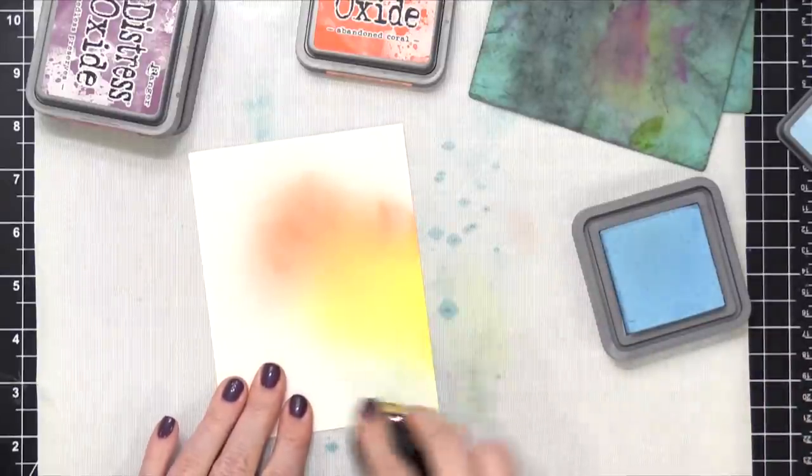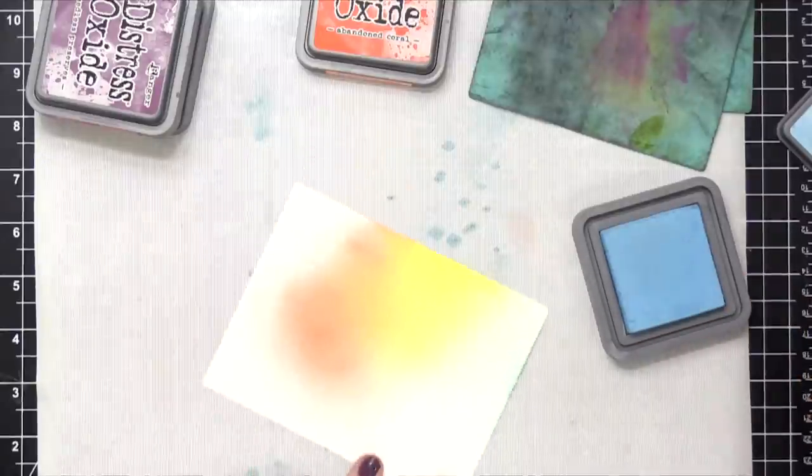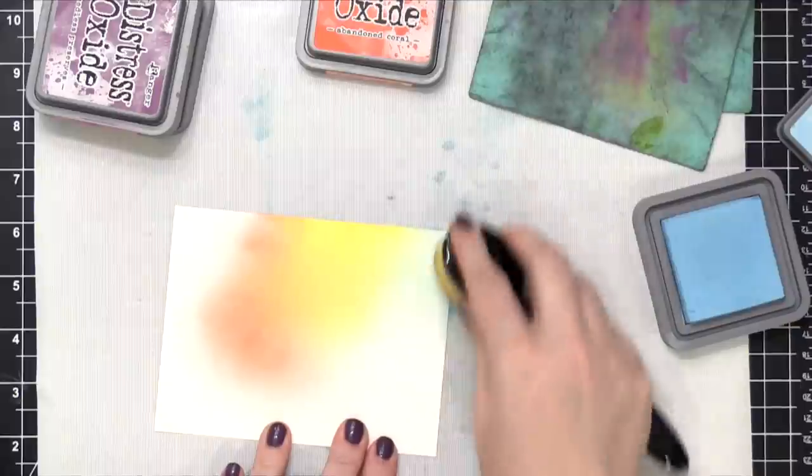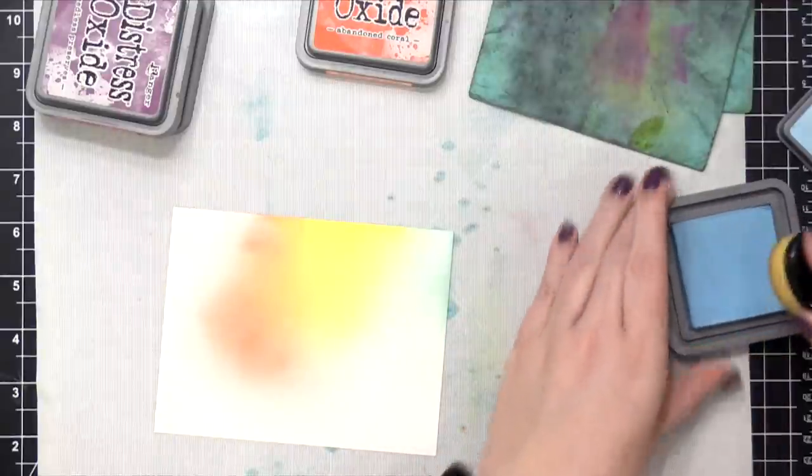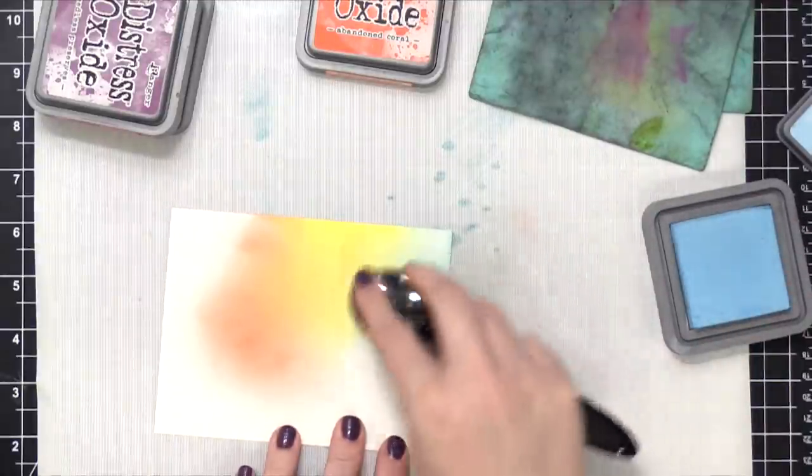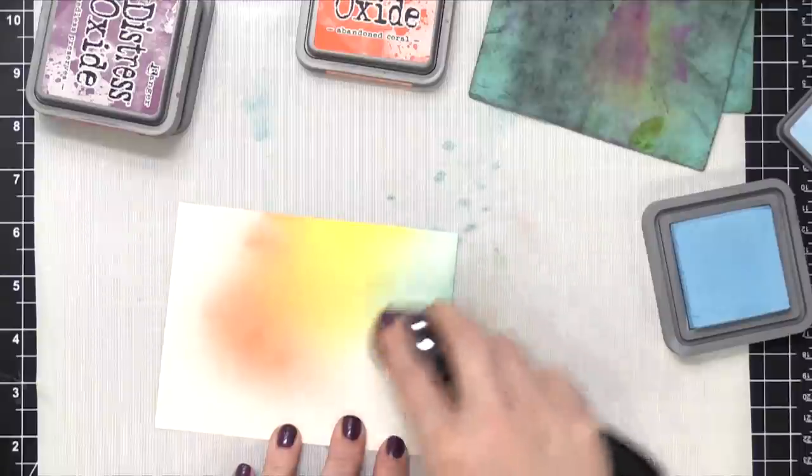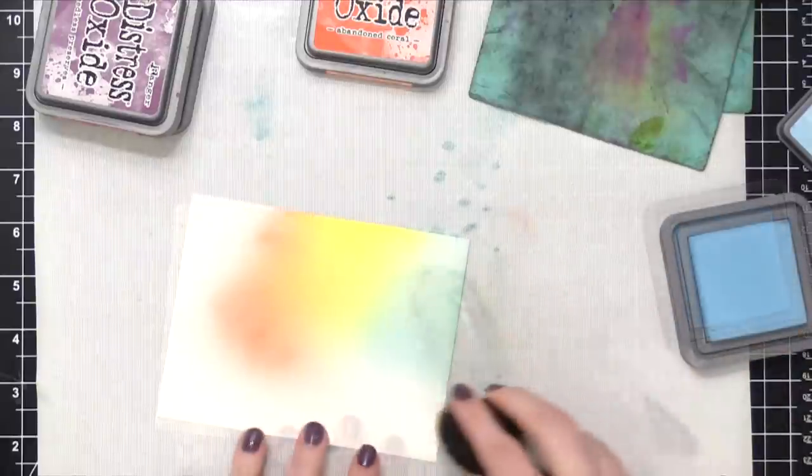Before when I was just pouncing it on, it wasn't applying enough ink onto that brush. So I found that I have to swirl it onto the ink pad and then bring it onto my cardstock. By the way, the cardstock I'm using today is Neenah Classic Crest Solar White 80-pound cardstock. It's the cardstock I use all the time, kind of like my go-to.